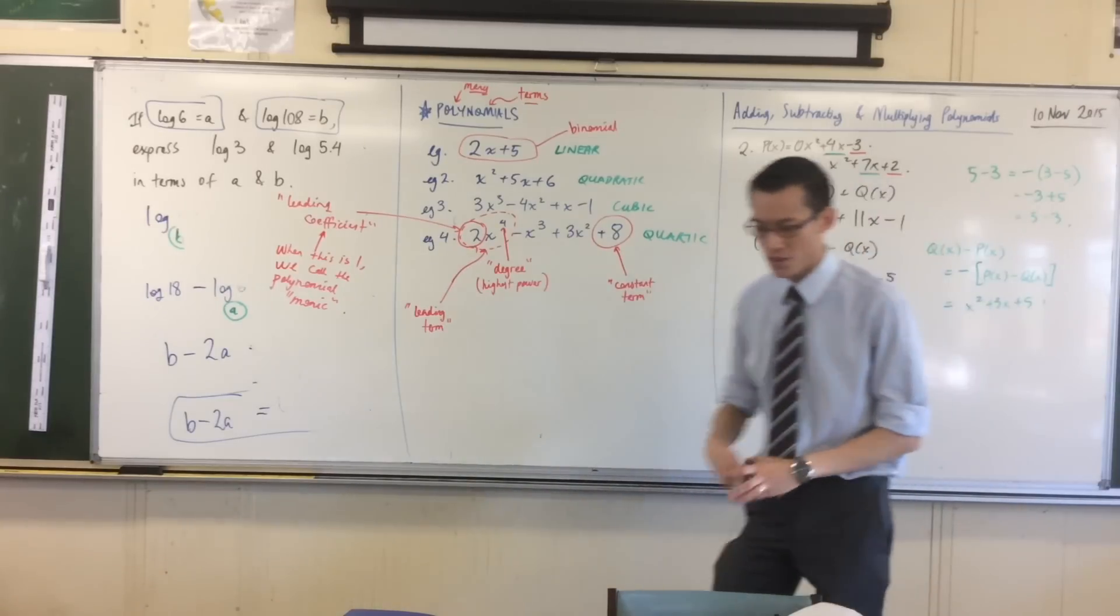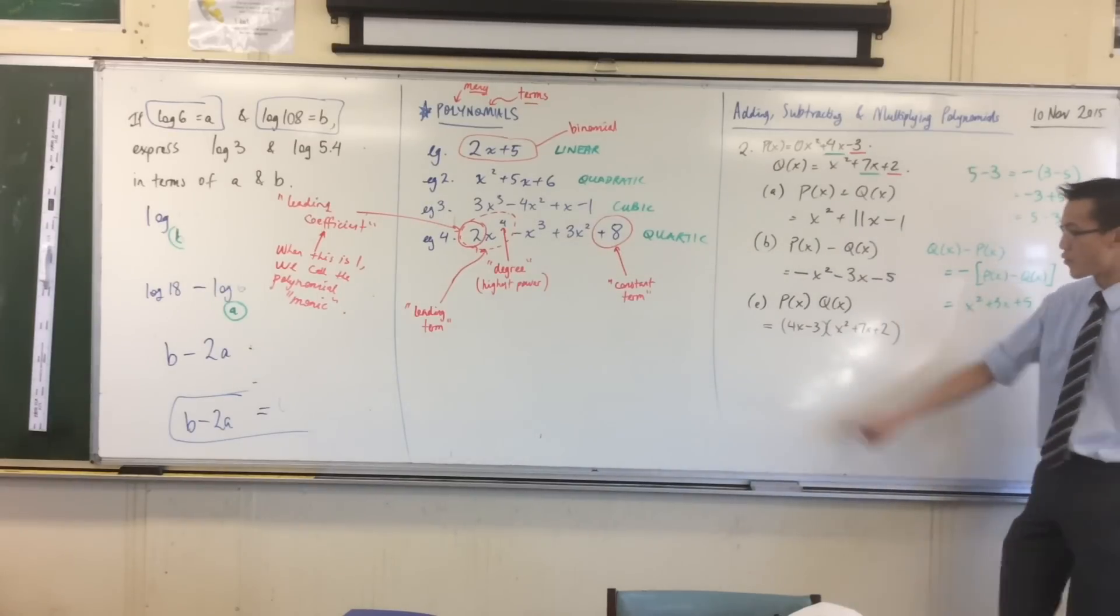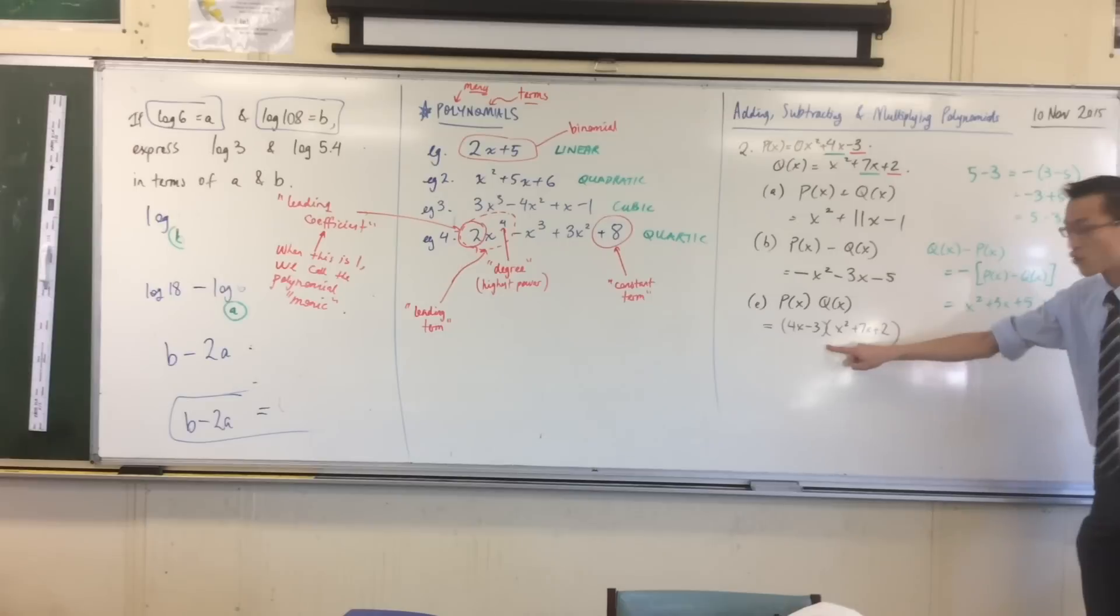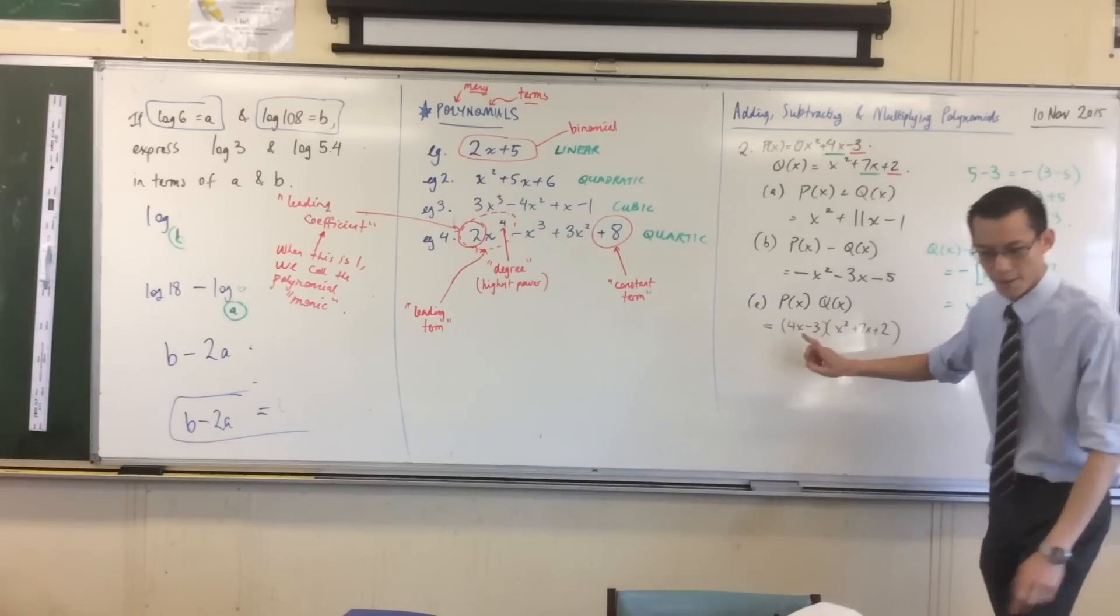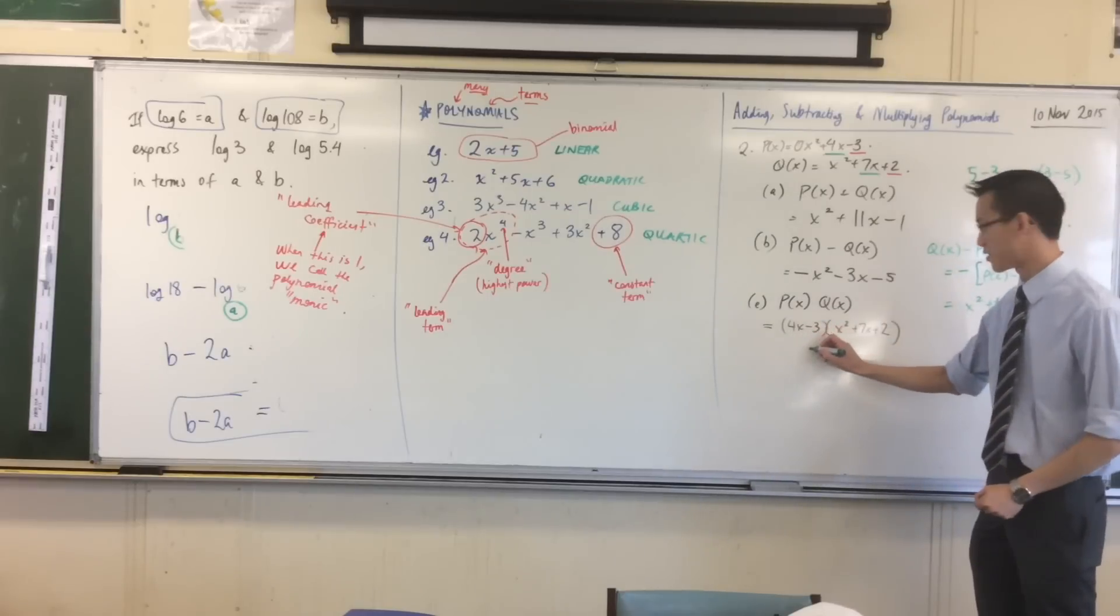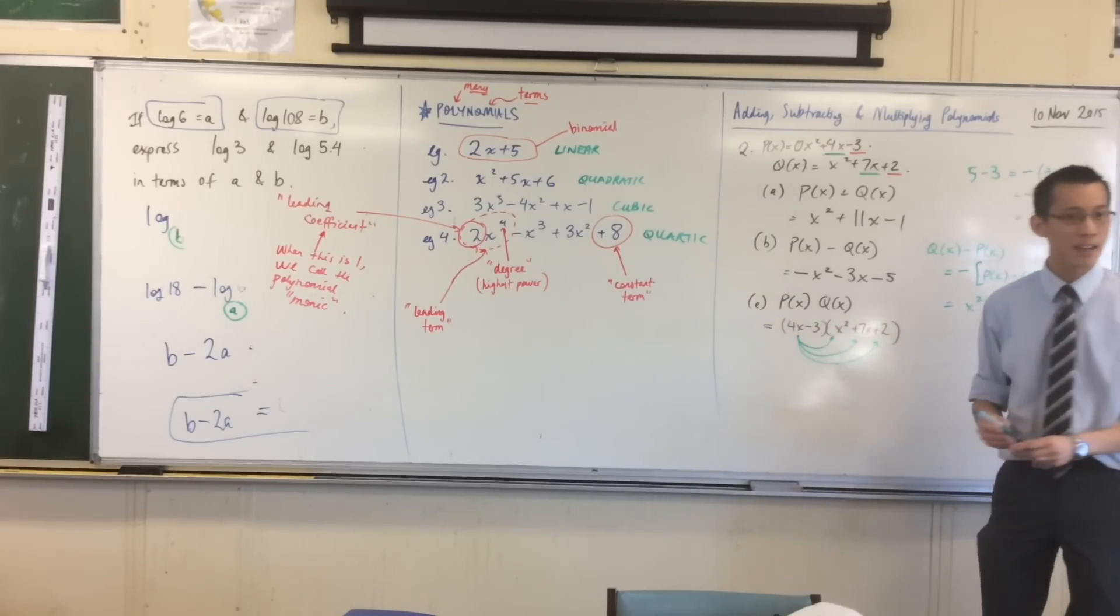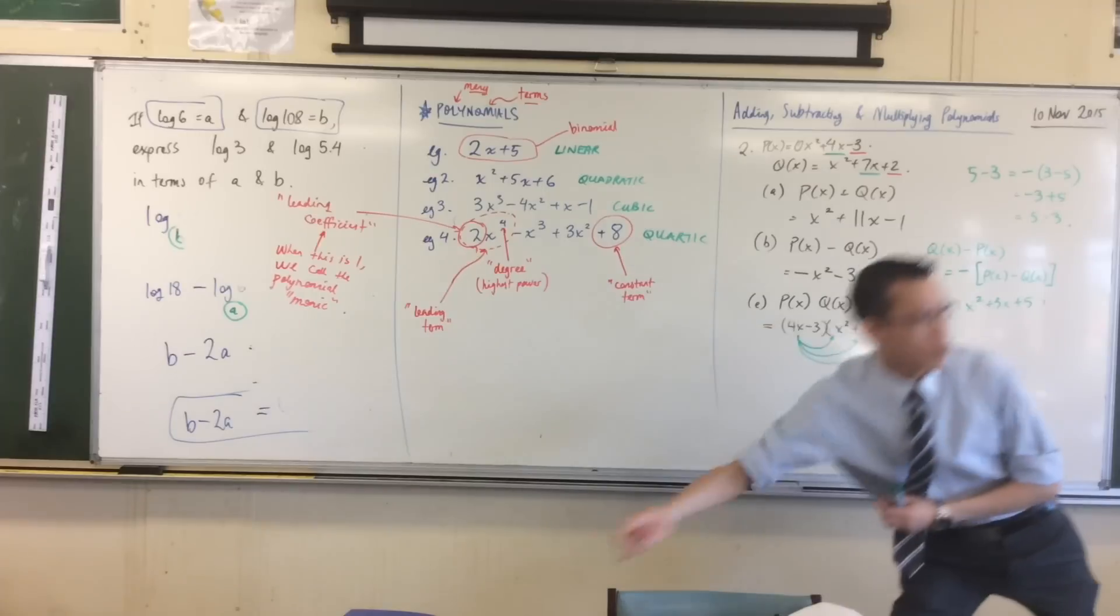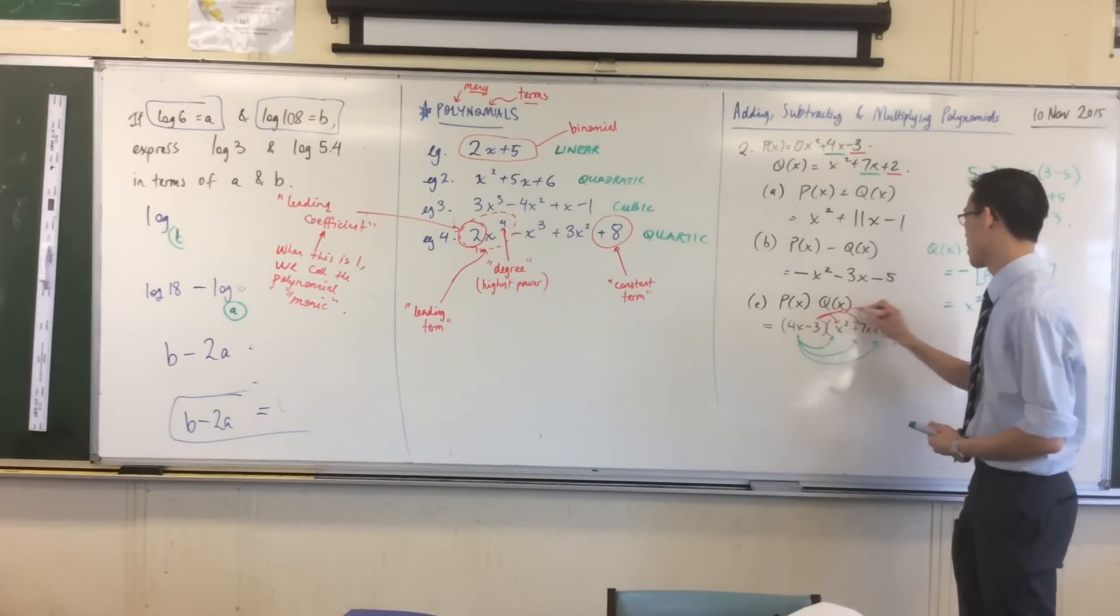Now, there's a variety of ways that you can do this, but just before we actually start doing it, you've got two terms here and you've got three terms here. I've talked about this before, that when you're expanding out terms like this, it's kind of like each of these terms at the front is going to say hi to every one of these people inside the house. So for example, this 4x is going to say hi to this guy, and this guy, and this guy. And then the negative 3 repeats the process for this guy, and this guy, and this guy.